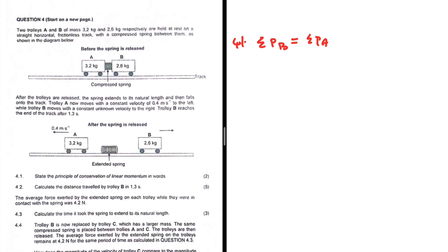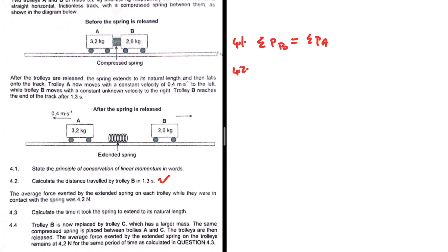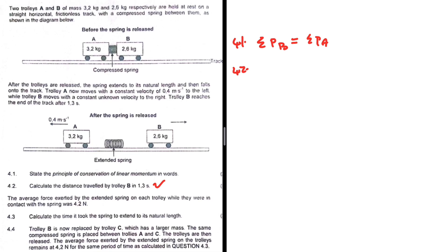But anyway, let's go ahead and do 4.2. So 4.2: calculate the distance traveled by trolley B in 1.3 seconds. Quite a unique question in that, for the most part, usually we're supposed to calculate vf, vi, the mass, something like that. But in this question we are asked to calculate the distance traveled by trolley B in 1.3 seconds.